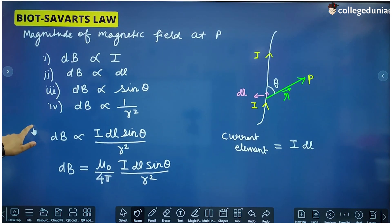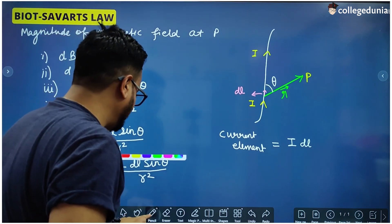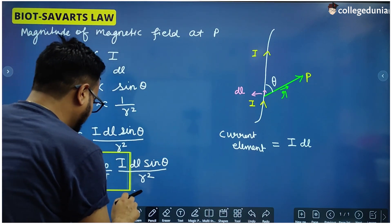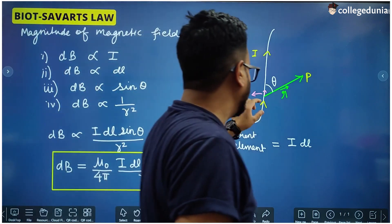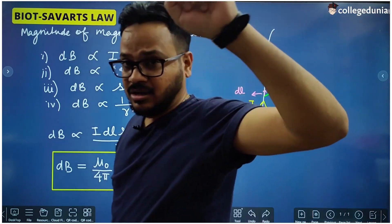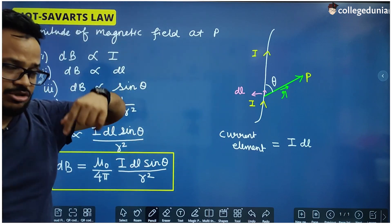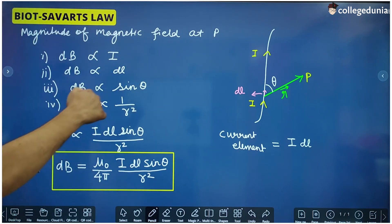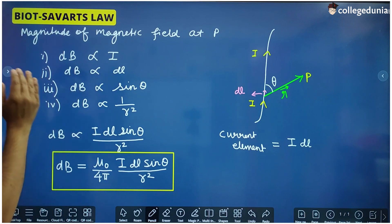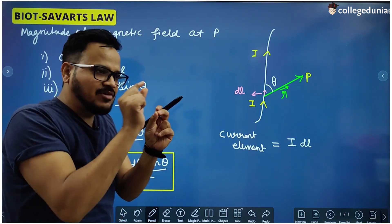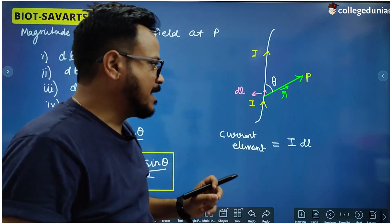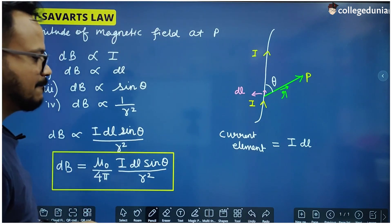This magnetic field dB is just for the small DL part of the conductor. If we want to find the magnetic field due to the whole conductor, we must know the other parameters like the length and shape of the conductor. For example, if the shape is circular and we want the field at the center, we use this formula for each small part and then integrate within proper limits to find the total magnetic field. That can be done using Biot-Savart's law.